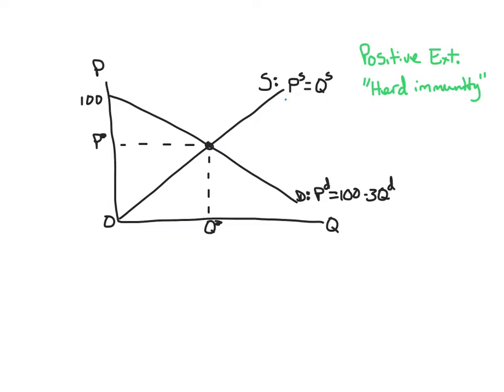The supply curve is just representing the private marginal cost of producing vaccines. And the demand curve is reflecting the private marginal benefit to those actually receiving the vaccine. It's not considering the positive externality. If it was, then this market would look different.